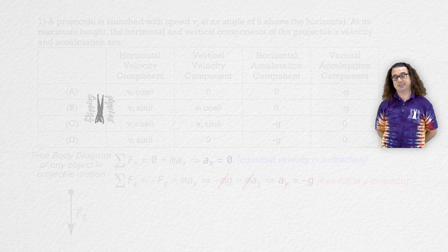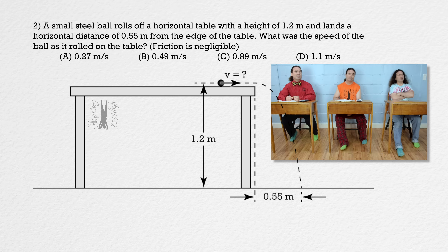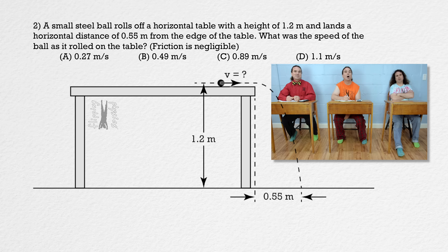Bobby, please read the next question. Question 2. A small steel ball rolls off a horizontal table with a height of 1.2 meters and lands a horizontal distance of 0.55 meters from the edge of the table. What was the speed of the ball as it rolled on the table? Friction is negligible. Bo, please solve this one. This is pretty much exactly like a lab we did in class — and like when we dropped a ball out of a moving car into a bucket. Very similar.